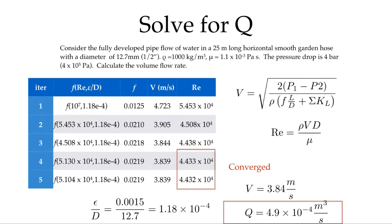Which gives me a velocity of 3.84 m/s, and from that I can calculate the volume flow rate of 4.9×10⁻⁴ m³/s. If you were to go back to the previous video and see the flow rate that we had when we didn't have the minor losses and the roughness, you'd see that it was a fair bit higher than this—it was 5.4 or 5.5×10⁻⁴ cubic meters per second.